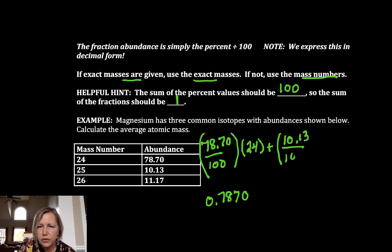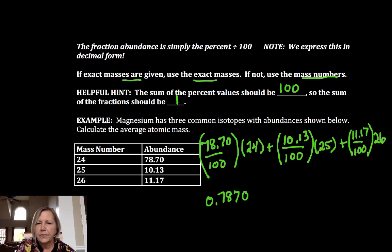Plus 10.13, the abundance over 100, percent abundance over 100, times 25, plus 11.17 over 100 times 26. So fraction mass plus fraction mass plus fraction mass.